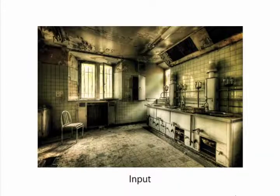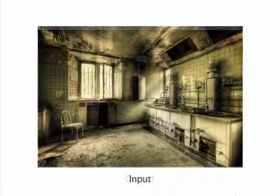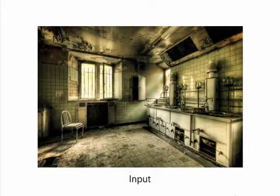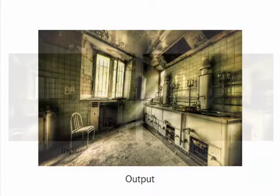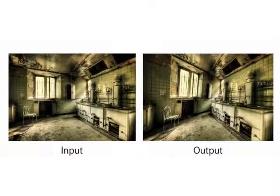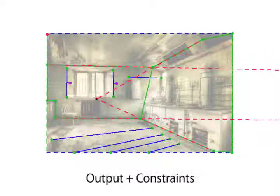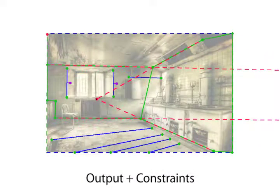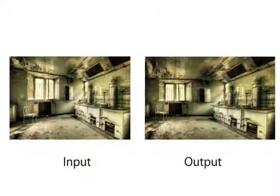Flipping back and forward between the input and output, we see how the result has a stronger perspective effect with more sharply converging lines. It also makes the room feel more tightly enclosing than in the original photo. We can modify the constraints and move the vanishing points further out so the image looks more telephoto, and the room also looks more spacious.